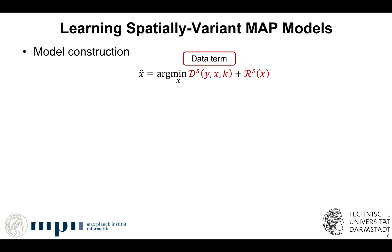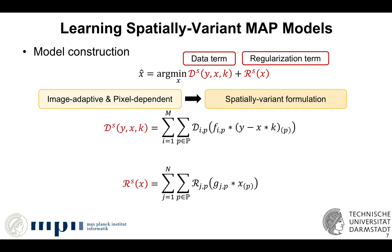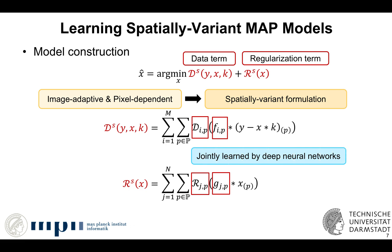To do this, we first propose an expressive MAP model, where the data and regularization terms are constructed with image-adaptive and pixel-dependent feature extractors and penalty functions. All crucial components to define our model are learned by deep neural networks. Different from most prior work that focuses on advancing either the data or the regularization term, we propose to jointly learn these two crucial ingredients so that these two terms can benefit from their interplay.